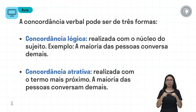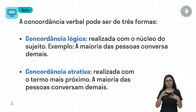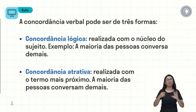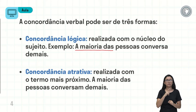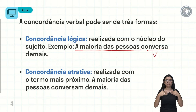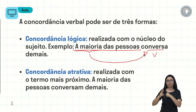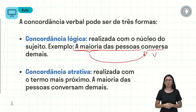A concordância verbal pode ter três formas. A primeira é a concordância ideológica, realizada com o núcleo do sujeito. Essa concordância ideológica tem a ver com a ideia que a oração está passando. Por exemplo: 'a maioria das pessoas conversa demais'. O sujeito é 'a maioria das pessoas', e o verbo pode concordar com a palavra 'maioria', que é um partitivo — indicando uma parte das pessoas. Chamamos isso de concordância ideológica.